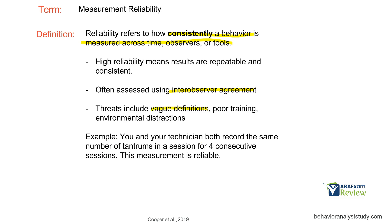Threats include, again, vague definitions — a vague definition is the quickest way to hurt your measurement. Your definitions need to be on point, clear, and complete. Poor training — you need to train data collection well and supervise well. And then environmental distractions: if one day at a client's house the siblings are out, nobody's there except their mom, everything's quiet and calm, data collection becomes pretty easy. But if the next session their siblings are home, both parents are home, they have family in town and it's a chaotic environment, reliability may suffer. You've got to plan for that and remind your technicians that even when the environment becomes distracting, we've got to focus on data collection.